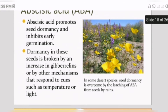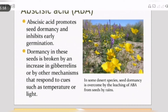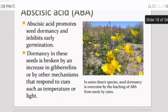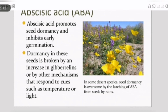Abscisic acid promotes seed dormancy and inhibits early germination. Dormancy in seeds is broken by an increase in gibberellin, or by other mechanisms that respond to cues such as temperature or light. With the help of temperature, light, and gibberellin, dormancy in the seed is broken.